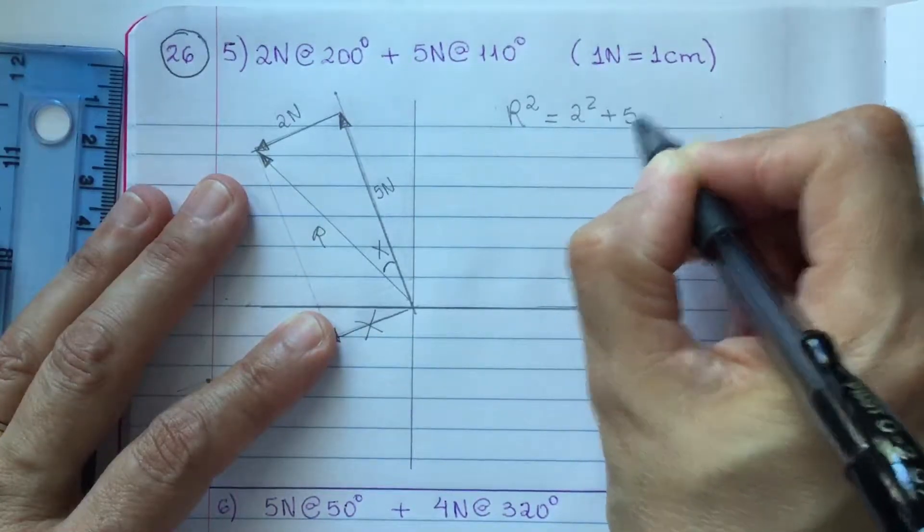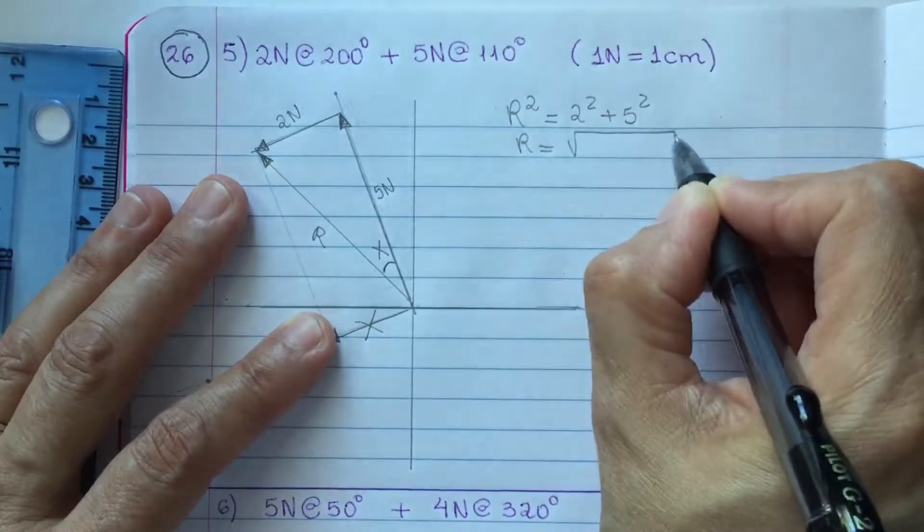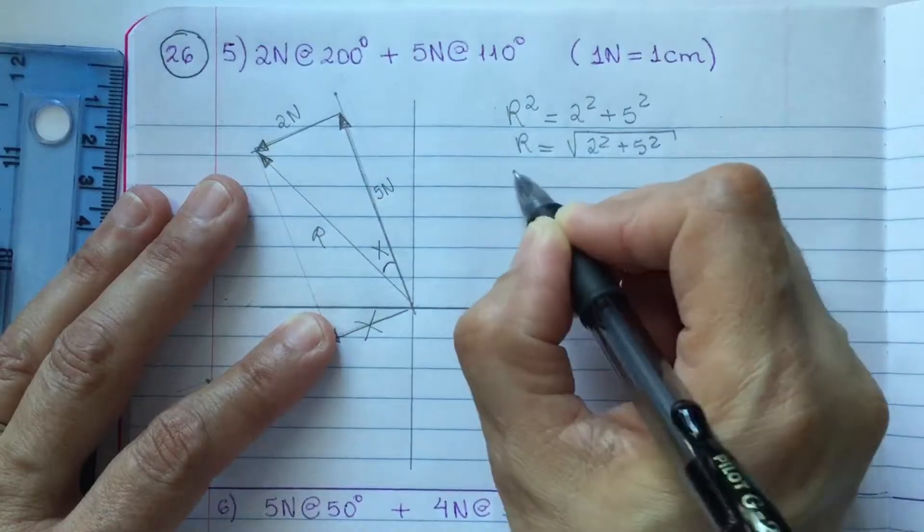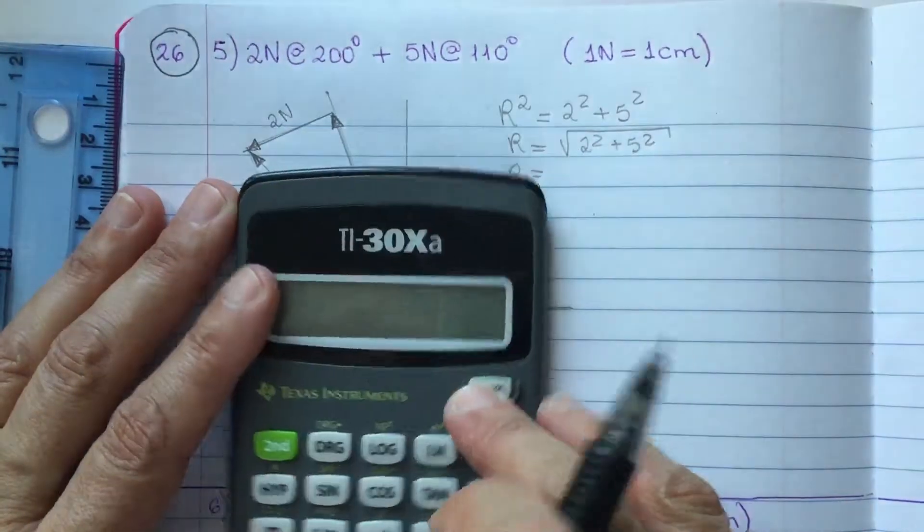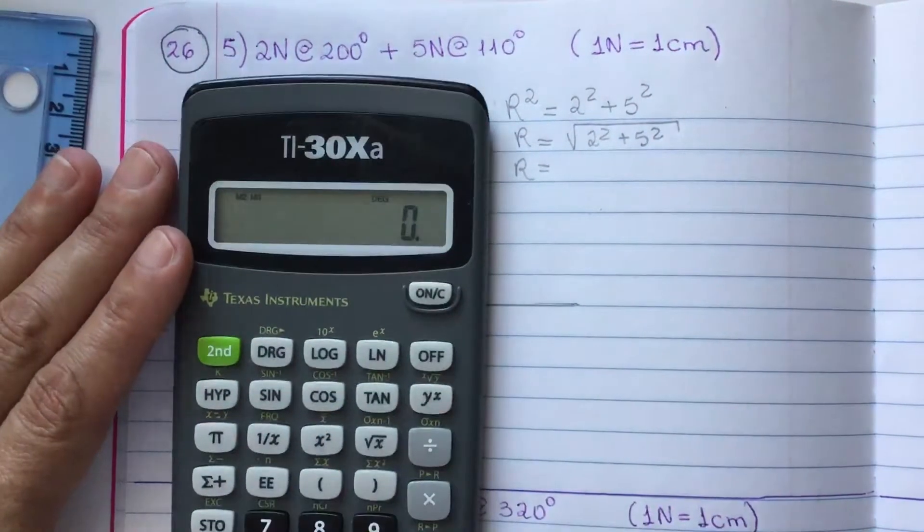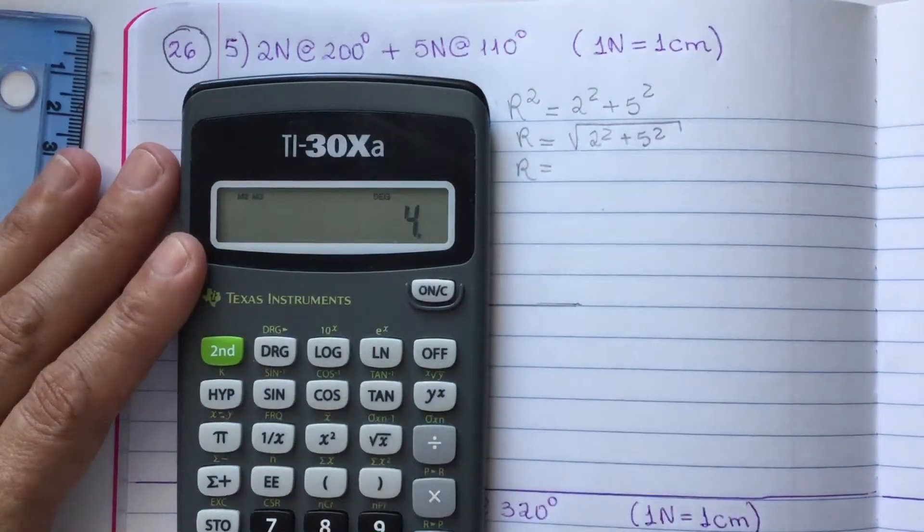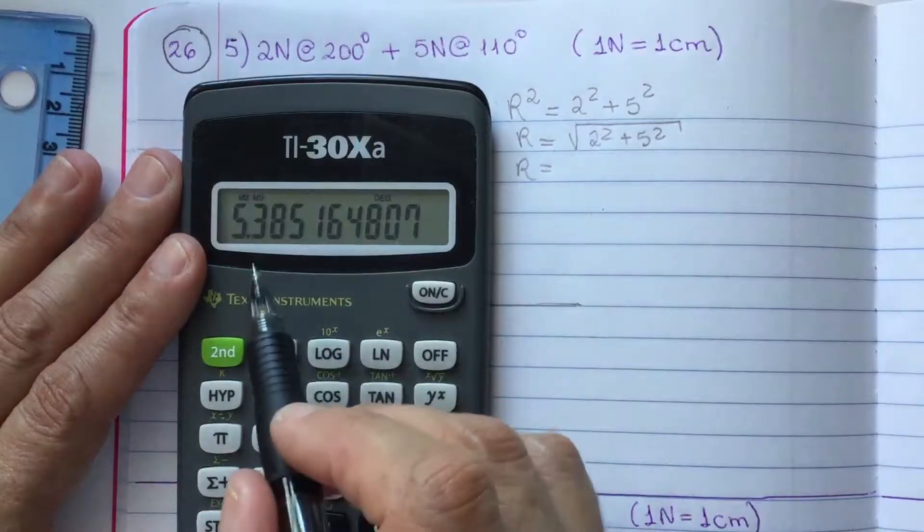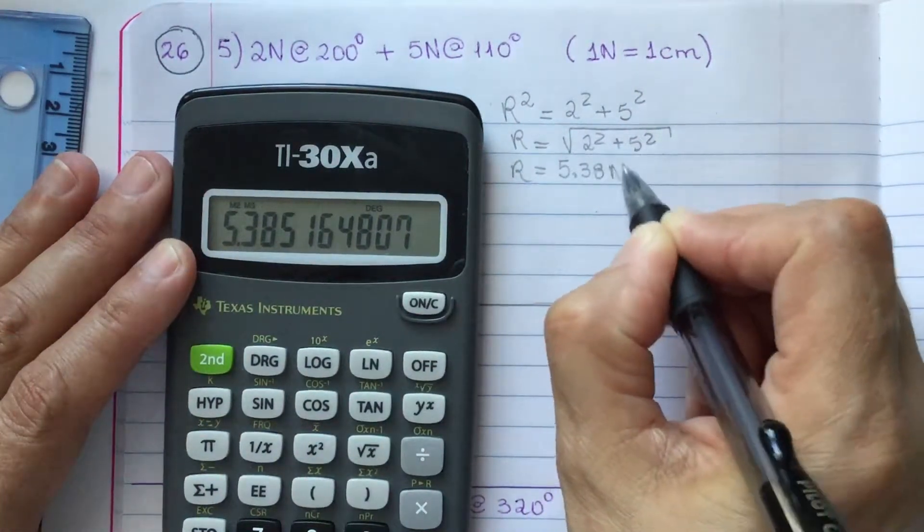2 square plus 5 square. So, my R is square root 2 square plus 5 square. My R is, using your calculator, 2 square plus 5 square root 5.38 newtons.